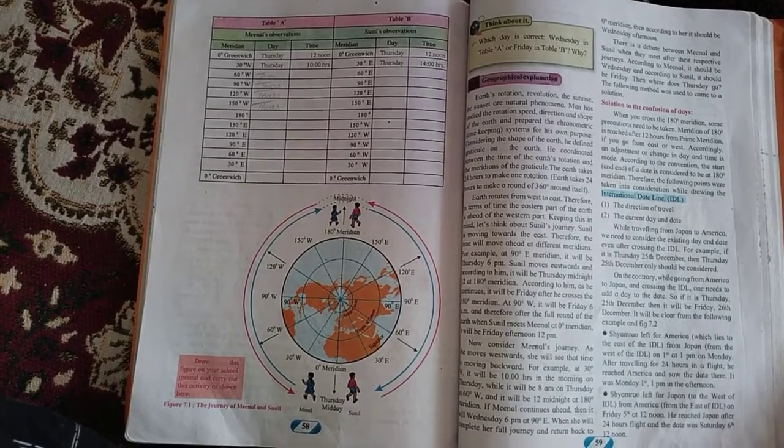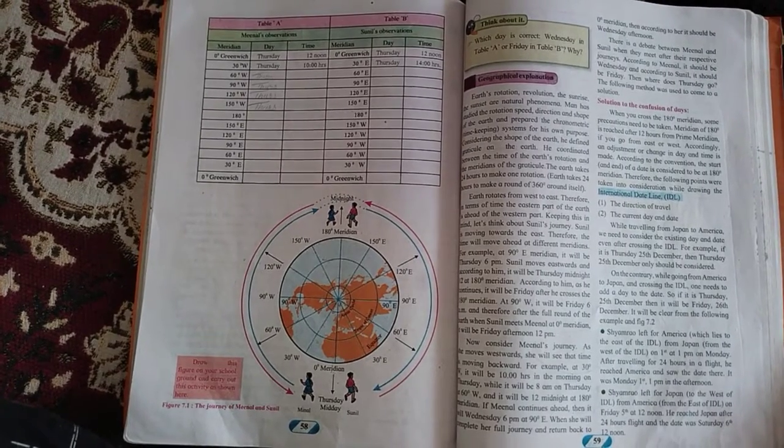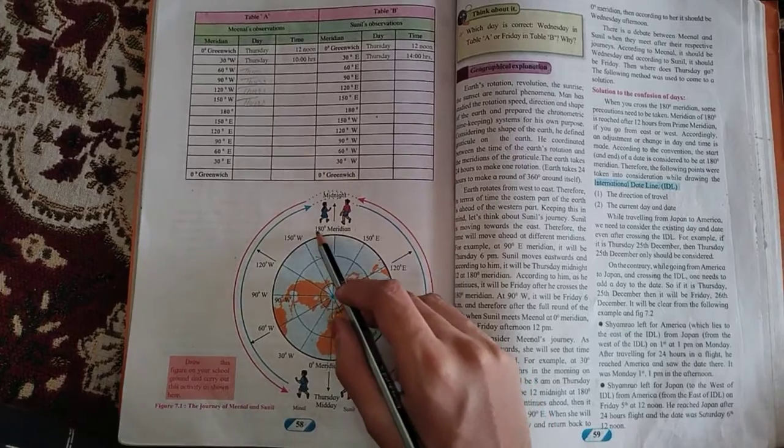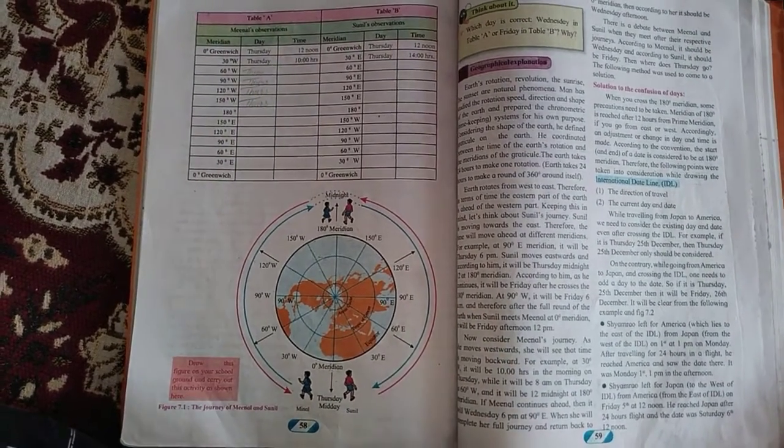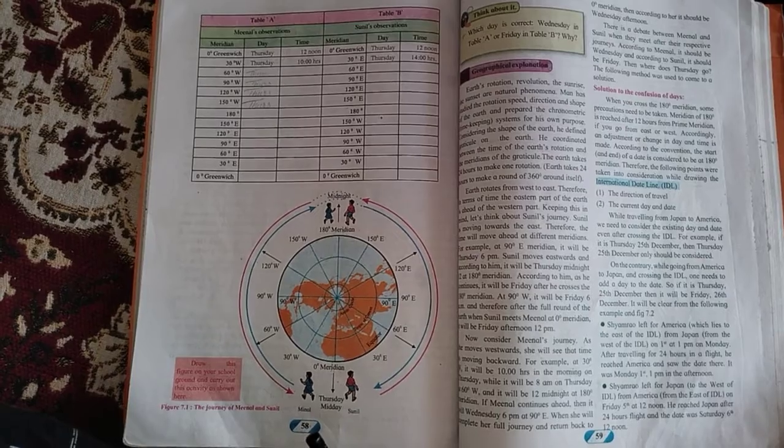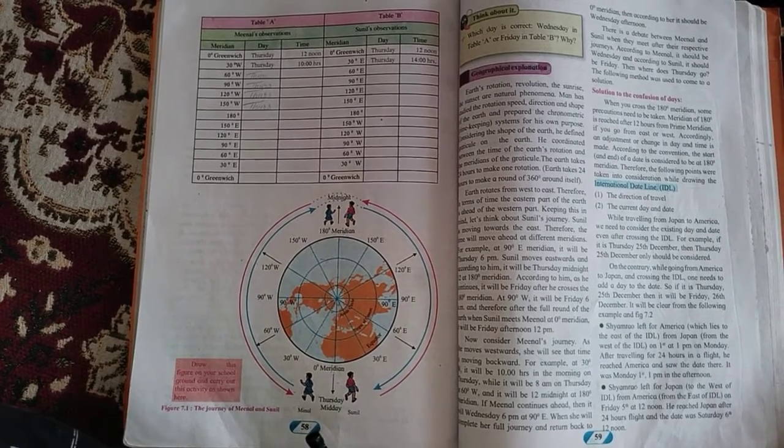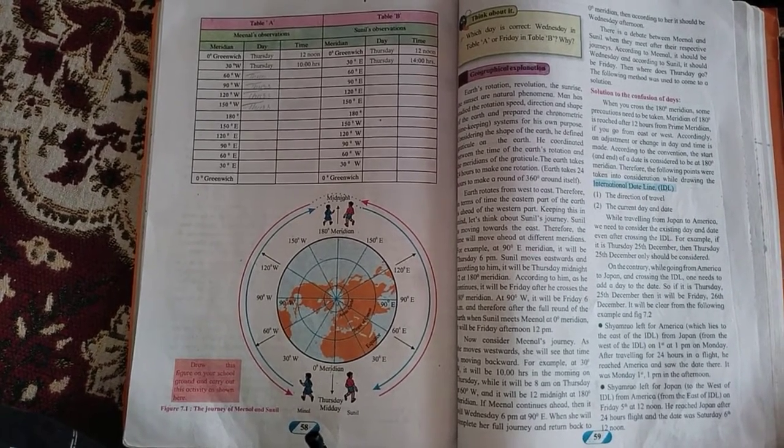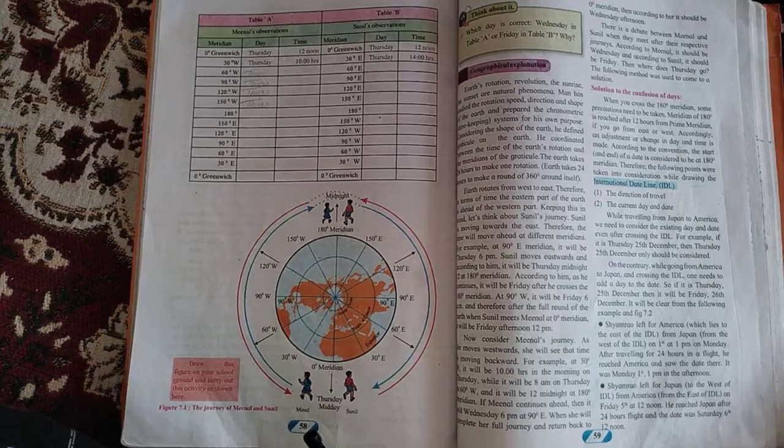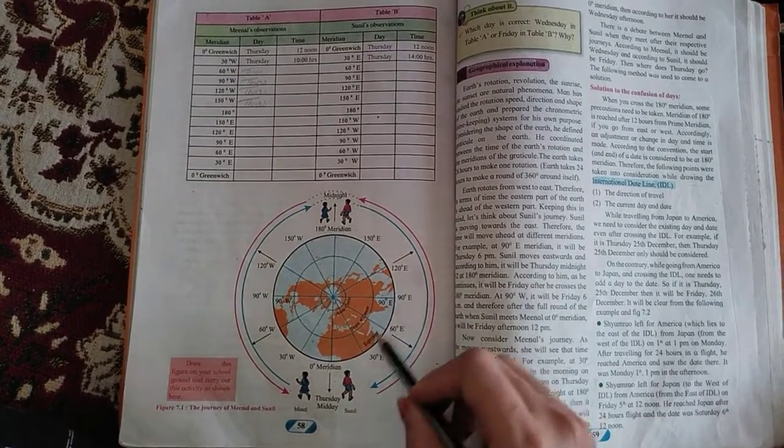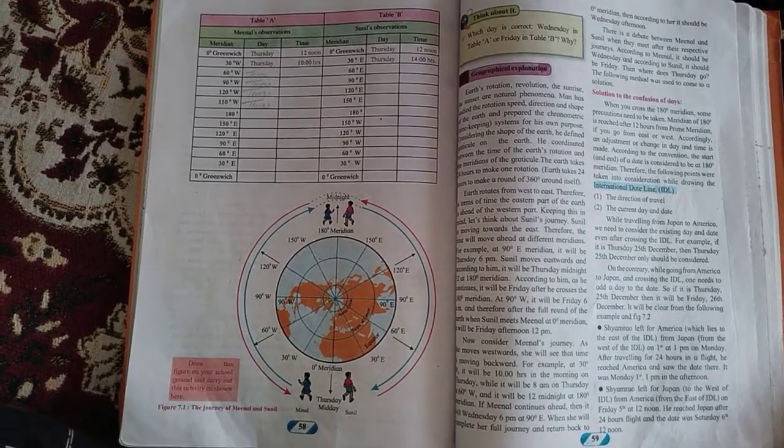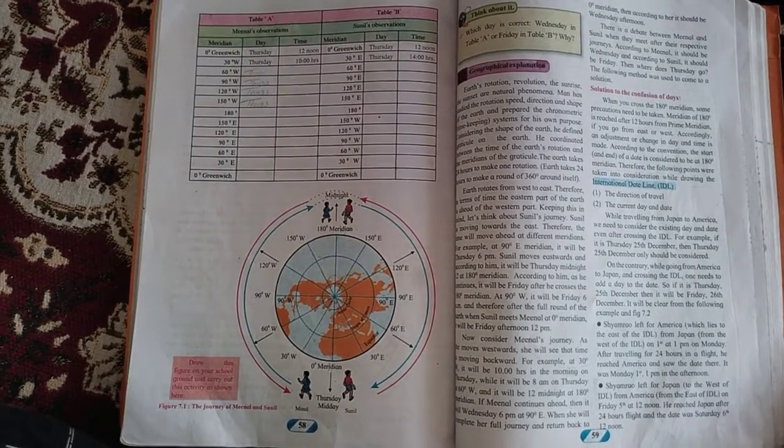Although the IDL, that is International Dateline, is drawn with reference to 180 degree meridian, International Dateline is not a straight line like 180 degree meridian. In order to pass IDL only on ocean areas, IDL is turned to the east or west of 180 degree. Hence, IDL is not a straight line.